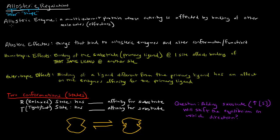When we think about allosteric, I kind of think 'other site' as well — other shape or other site. Allosteric enzymes are multi-subunit proteins whose activity is affected by binding of other molecules. If they're multi-subunit proteins, something we should know is that they have quaternary structure — that's the highest level of protein structure they have.